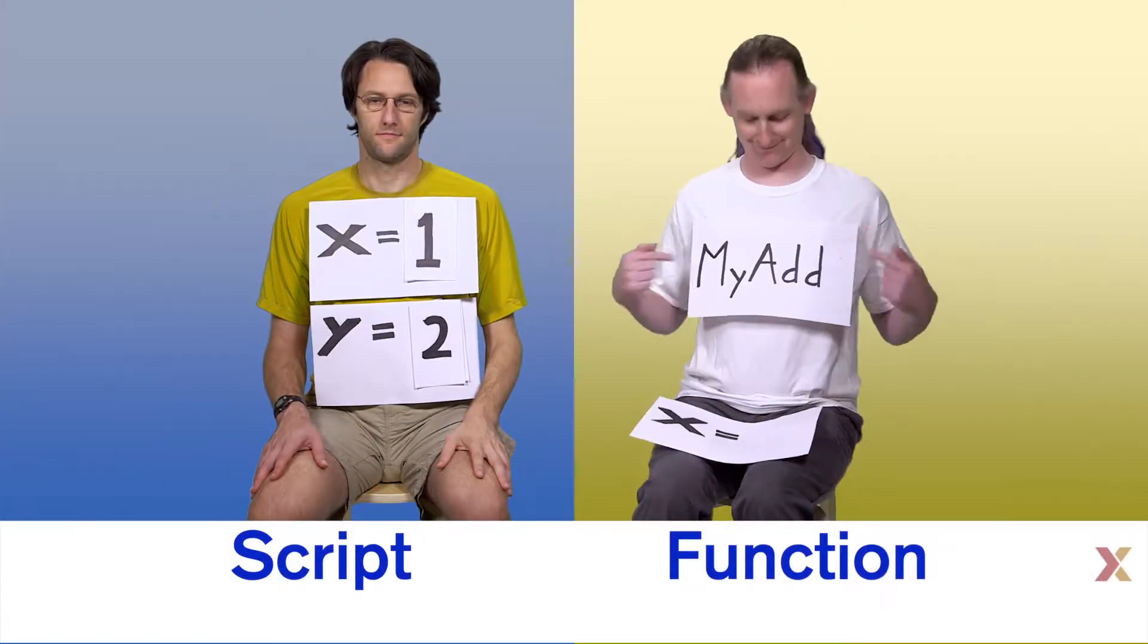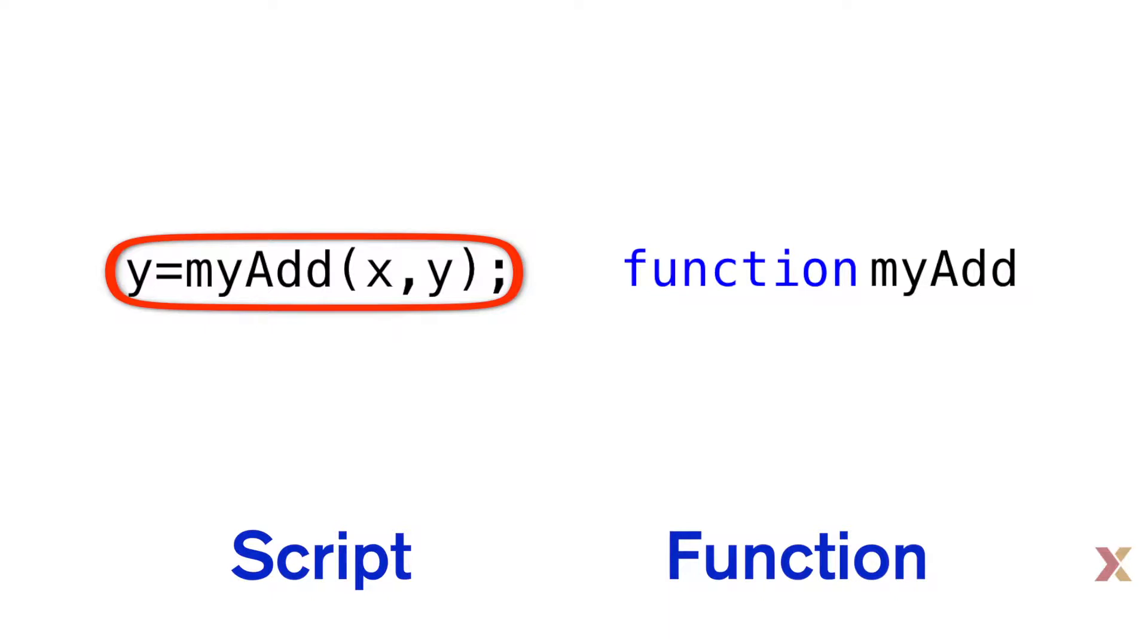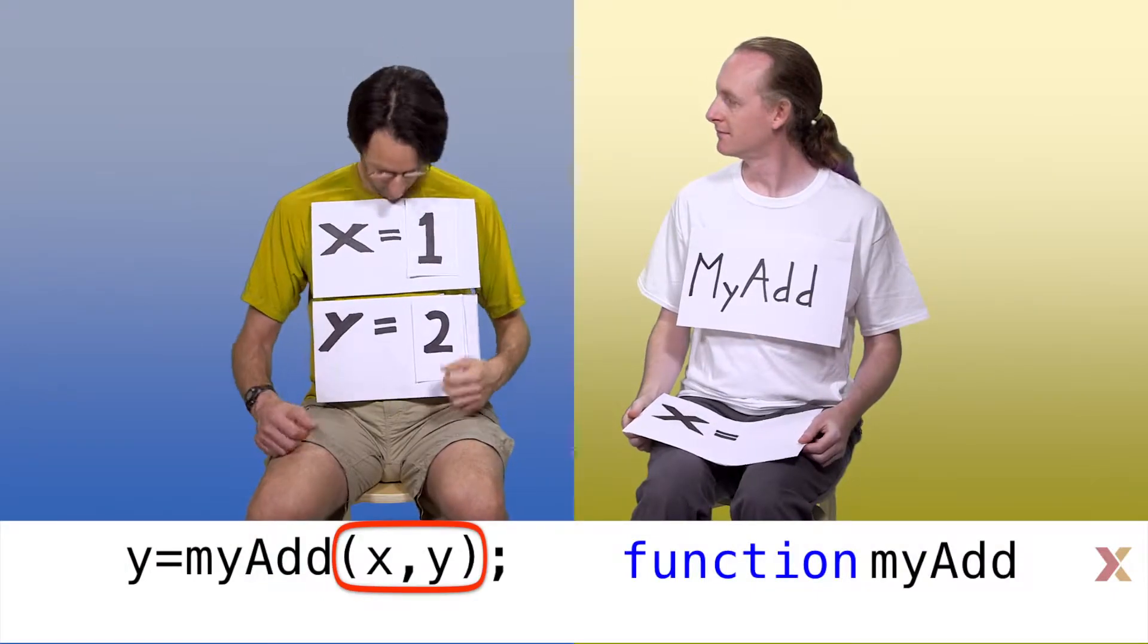Colin and I are going to visually act out a function that adds two numbers together. The script calls the function with the following line, y equals myAdd parentheses x comma y. The script needs to get these values of x and y and give those to the function myAdd.